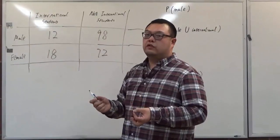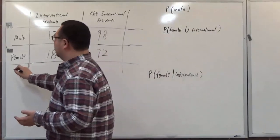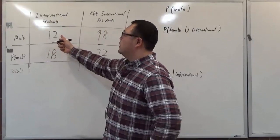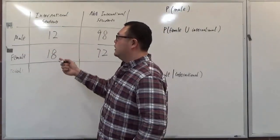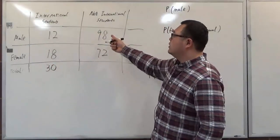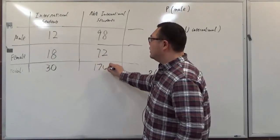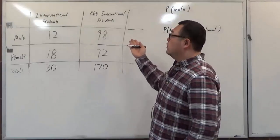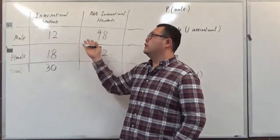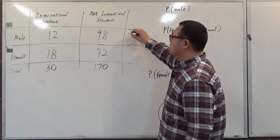If we want to find the totals from the survey: the international students total is 18 and 12 together, that's 30. The non-international students total is 98 and 72 together, which is 170. For the male students row total, adding international and non-international together, we have 12 plus 98, which is 110.